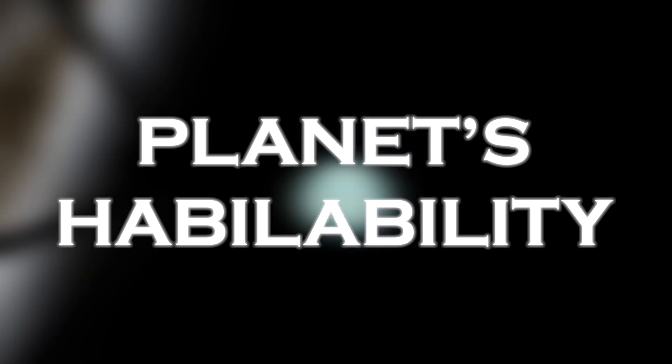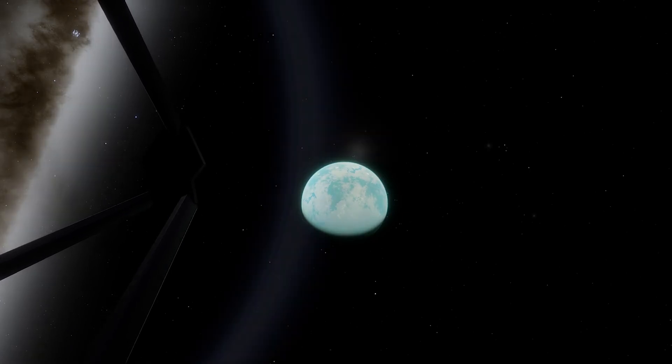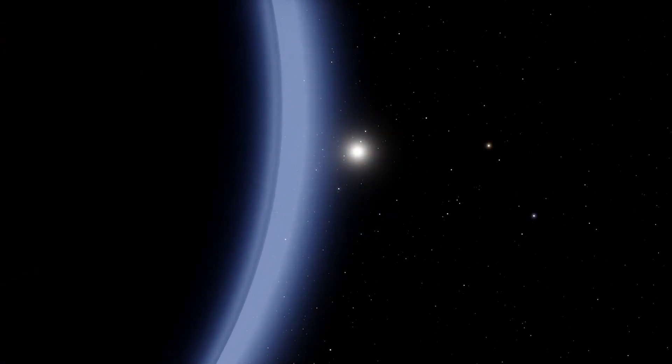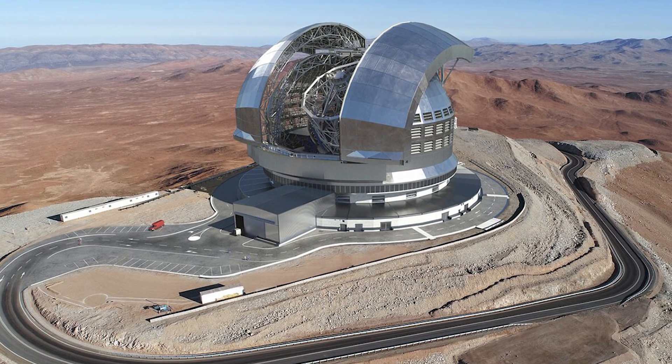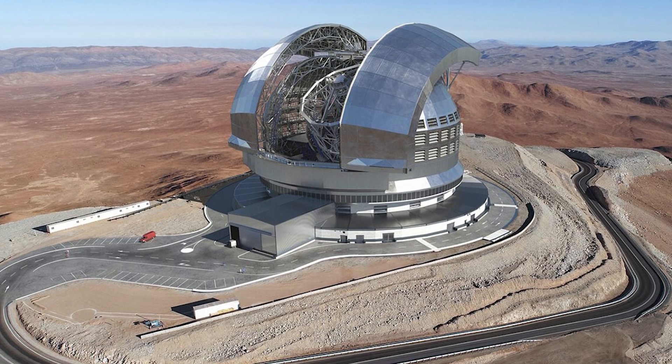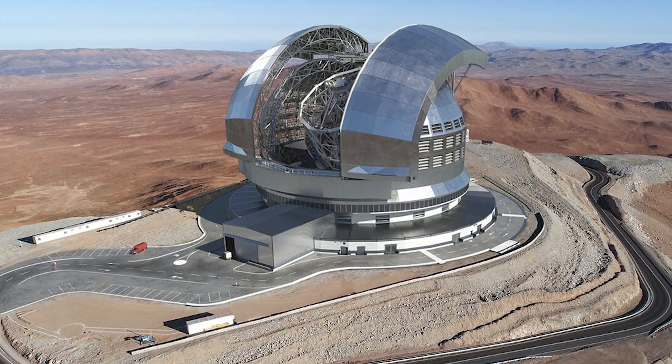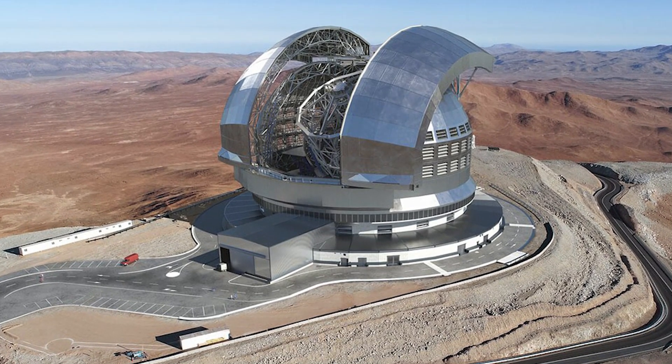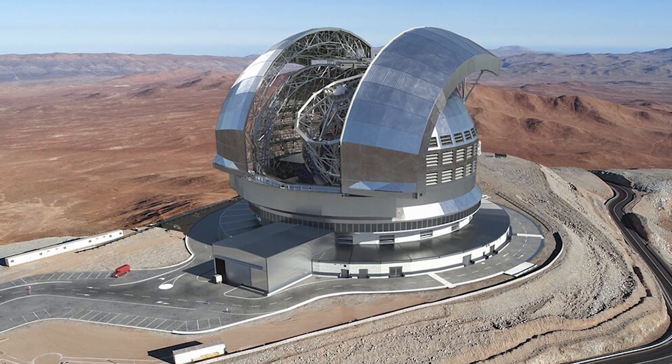It is important to keep in mind that the JWST cannot explore all potential habitable worlds, as it has limited capabilities and can only observe some of the exoplanets closest to Earth. Therefore, astronomers are turning to ground-based observatories such as the Extremely Large Telescope, the ELT, which is expected to become operational in 2028 and allow for a deeper investigation of the atmospheric structure of distant exoplanets.